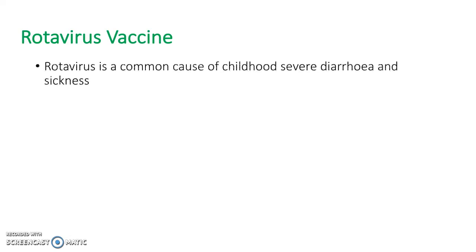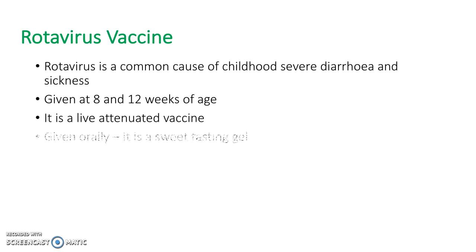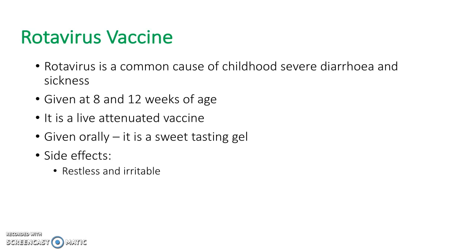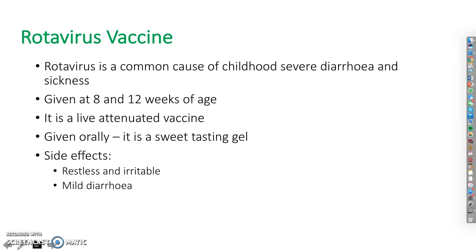Rotavirus is a very common cause of diarrhoea and vomiting, which can cause severe dehydration in children. The vaccine is given at 8 and 12 weeks of age. It is a sweet-tasting gel, and because of this, it is often given as the last vaccine in the appointment to help calm babies down after their other injections. There is a possibility that the vaccine itself can cause mild infection as it is a live vaccine, but this is rare.